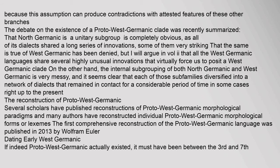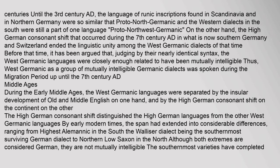Several scholars have published reconstructions of Proto-West Germanic morphological paradigms, and many authors have reconstructed individual Proto-West Germanic morphological forms or lexemes. The first comprehensive reconstruction of the Proto-West Germanic language was published in 2013 by Wolfram Euler. If indeed Proto-West Germanic actually existed, it must have been between the 3rd and 7th centuries. Until the 3rd century AD, the language of runic inscriptions found in Scandinavia and in Northern Germany were so similar that Proto-North Germanic and the western dialects in the south were still a part of one language — Proto-Northwest Germanic.